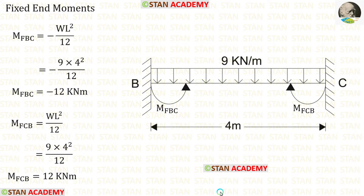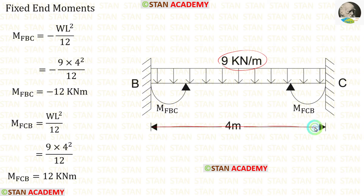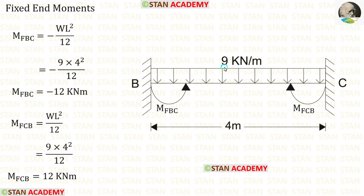Now let us find the fixed end moments in the beam BC. In the beam BC, there is a UDL of 9 kN per meter acting for the full span. The formulas for the fixed end moments are minus WL²/12 and plus WL²/12. Here W is 9 and L is 4. When we apply the values into the formulas, we get M_BC and M_CB.